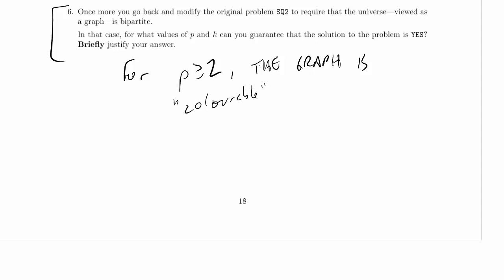Because a bipartite graph, we can color all the nodes on the left one color, all the nodes on the right another color, and we will solve the problem. So for P greater than or equal to 2, this will work, and it doesn't matter what the value of K is.